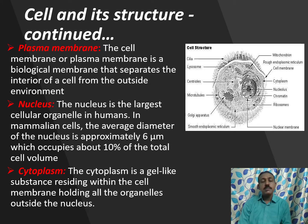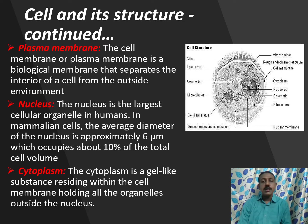The important parts of a cell are the plasma membrane, nucleus and cytoplasm. The plasma membrane is a biological membrane which separates the interior and exterior of a cell from the outside environment. The nucleus is the largest cellular organelle in humans. In mammals, the average diameter of the nucleus is approximately 6 micrometers, which occupies about 10% of the total cell volume. The cytoplasm is a gel-like substance which resides within the cell membrane and holds all the organelles outside the nucleus.